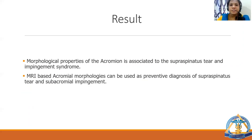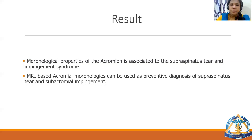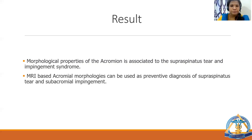The results showed that morphological properties of the acromion, including acromial index, are associated with supraspinatus tear and impingement syndrome. MRI-based acromial morphologies can be used as preventive diagnosis of supraspinatus tear and subacromial impingement.